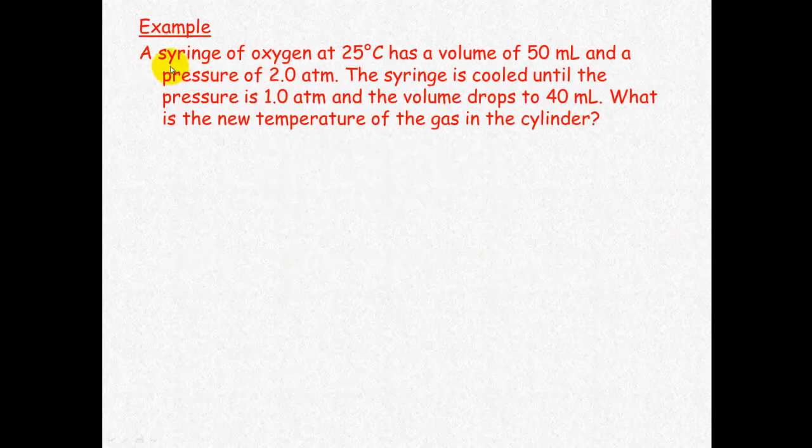So let's look at an example question. A syringe of oxygen at 25 degrees Celsius has a volume of 50 ml and a pressure of 2.0 atmospheres. The syringe is cooled until the pressure is 1 atmosphere and the volume drops to 40 ml. What is the new temperature of the gas in the cylinder?